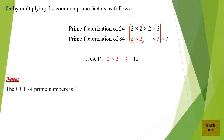Or, by multiplying the common prime factors as follows: prime factorization of 24 equals 2 times 2 times 2 times 3, and the prime factorization of 84 equals 2 times 2 times 3 times 7. Therefore, GCF equals 2 times 2 times 3, which equals 12.